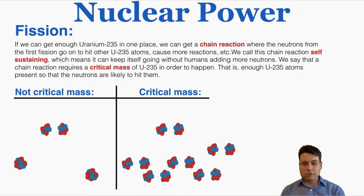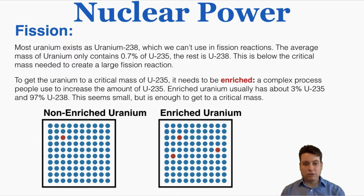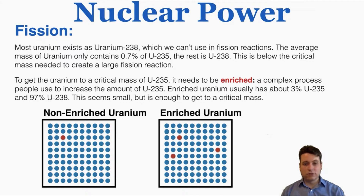Most uranium exists as uranium-238, which we can't use in fission reactions. The average mass of uranium only contains 0.7% uranium-235, and the rest is U-238 — below the critical mass needed for a large fission reaction. To reach critical mass of U-235, it needs to be enriched, a complex process to increase the amount of U-235. Enriched uranium usually has about 3% U-235 and 97% U-238. That seems like a small difference from 0.7%, but it's enough to achieve critical mass and allow an atomic reaction.